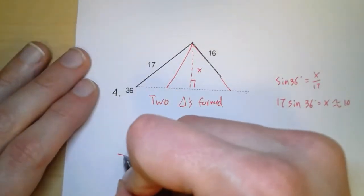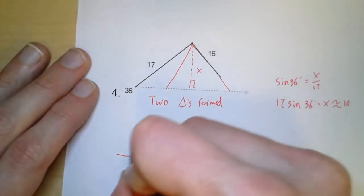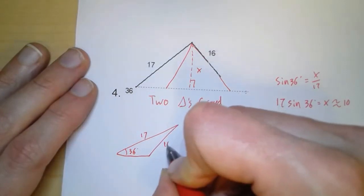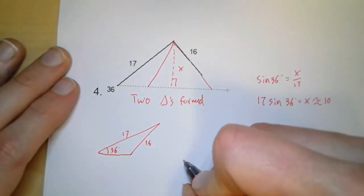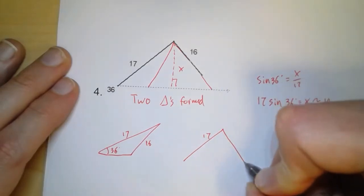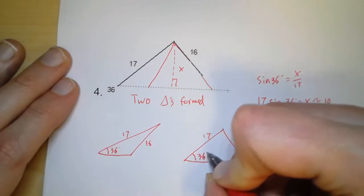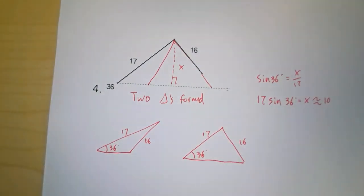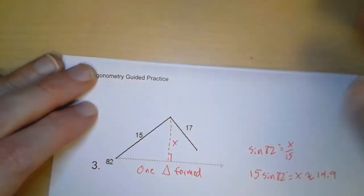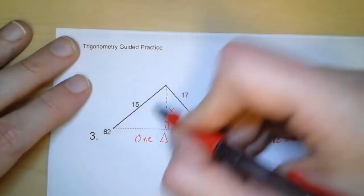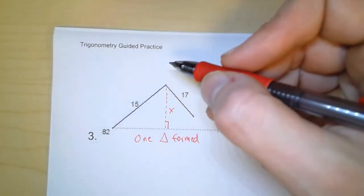And what they would look like is 16 could fit here, or it could fit here. So if I drew them out, look like that. Here's 36, here's 17, here's 16. Or here's 17, here's 16, and here is 36 degrees. And those two triangles look nothing alike. So we have two different solutions here. Now if I go back to here, that wouldn't work, because 17 is too large to fit into here. Because 17 is bigger than 15.